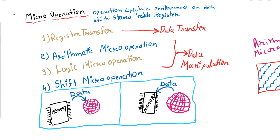Hello students, let us start our discussion. Let us start the topic — the first term is Micro operation. How do we define Micro operation? Micro operation is an operation which is performed on the data which is stored inside the register. So in simple words, whatever operation we perform on the data inside the register is known as Micro operation.